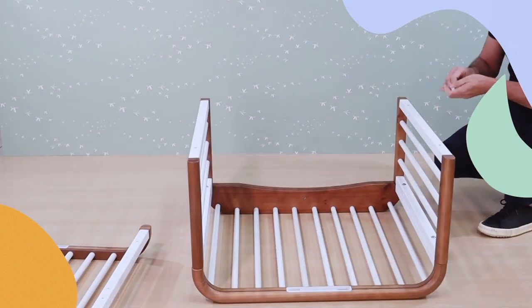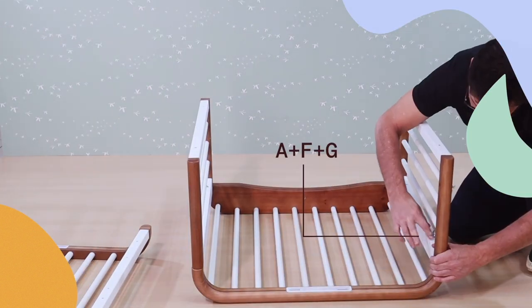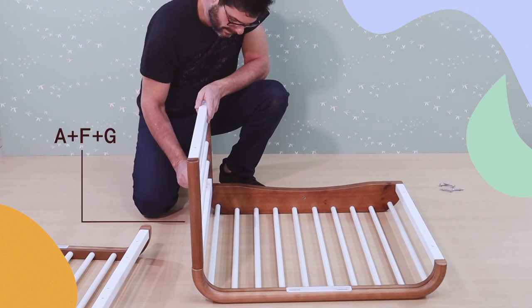Now we'll remove the Mini Crib side panels. Unscrew each of the bolts A using your Allen wrench and also remove lock washer F.